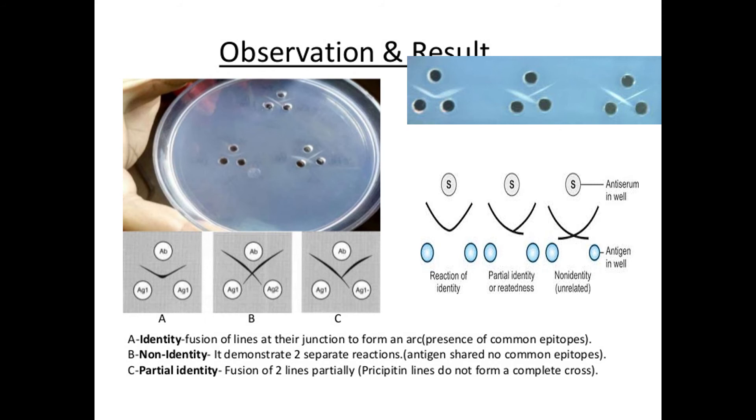In the reaction of identity, the solution of antigen is placed in two adjacent wells and the homologous antibody is placed in the center well. The two precipitate bands form and join at their closest ends and fuse. Therefore, we call it a reaction of identity, seen in the form of a V shape.